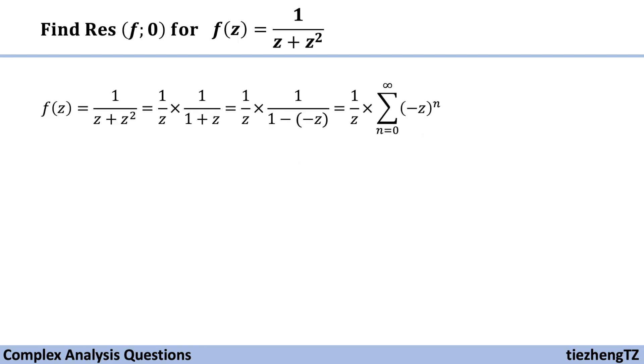So f(z) = 1/(z + z²) = 1/z × 1/(1 + z). And we can change 1 + z into 1 - (-z). We have introduced many examples in the previous videos you can refer to. So we can change this 1/(1 - (-z)) into sum from n = 0 to infinity of (-z)ⁿ.